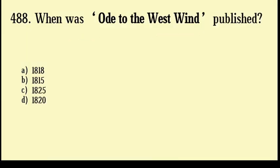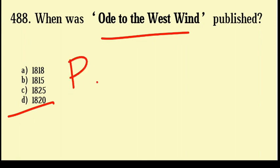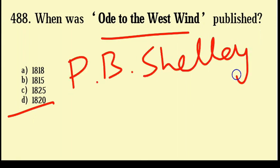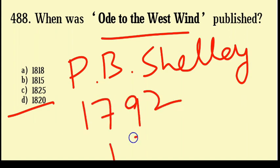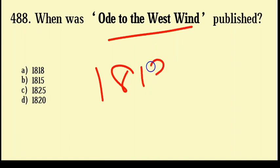When was Ode to the West Wind published? 1818, 1815, 1825, 1820. Correct answer: Option number D, 1820. Ode to the West Wind was written by P.B. Shelley, born 1792 and died 1822. He belonged to the Romantic period. The poem was written in 1819.